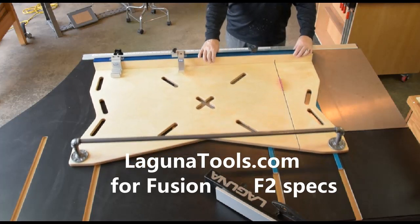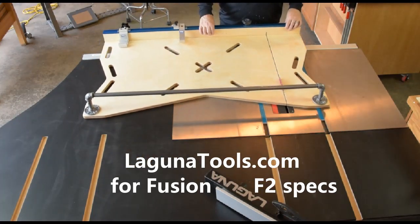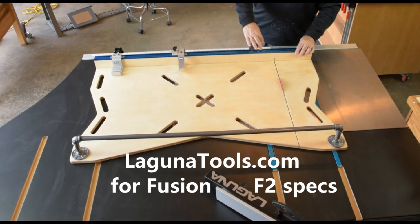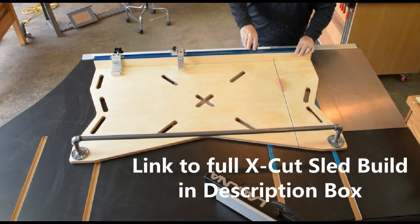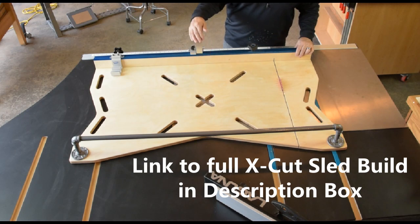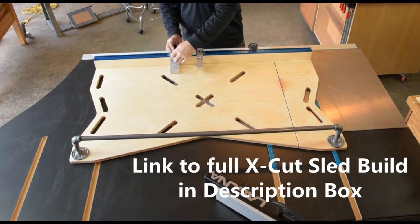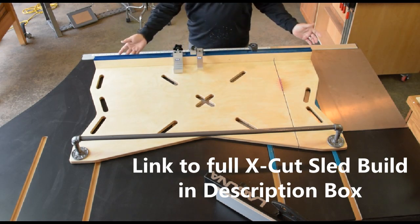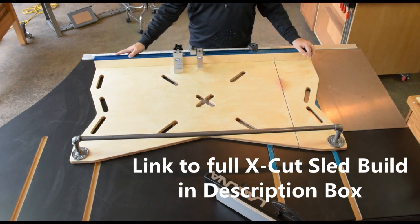Smooth sliding action of this large sled on the Laguna Fusion F2 table saw. Adjustable handle for easy control in any position. Flip stop, super convenient for day to day cuts. Get that swing arm out of the way when needed. And a production stop. The X-Cut sled. Make one for your Fusion F2 table saw.